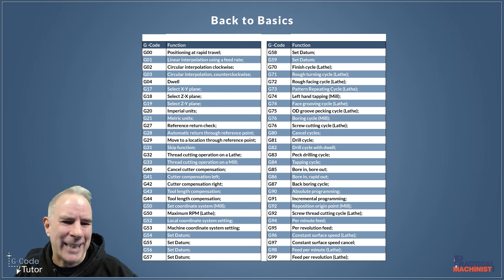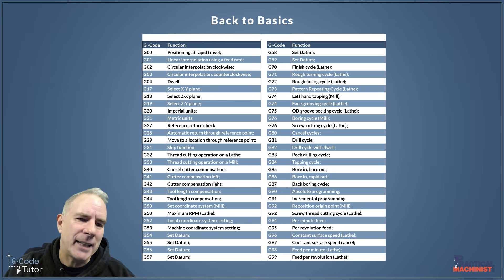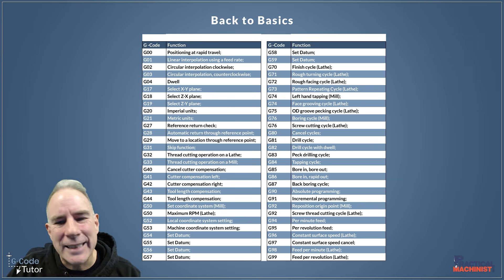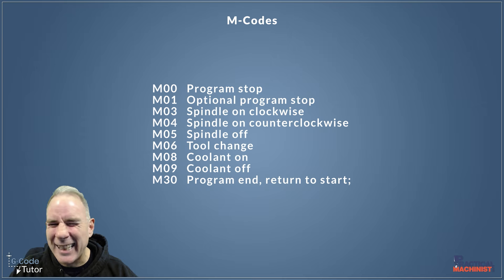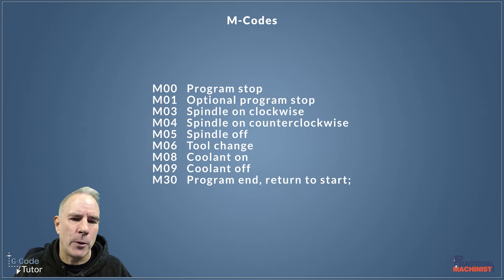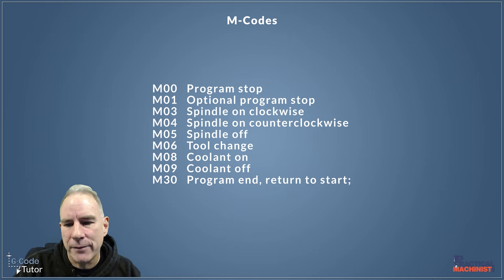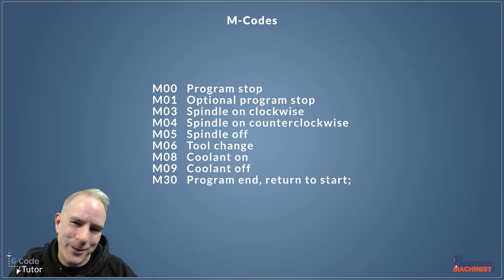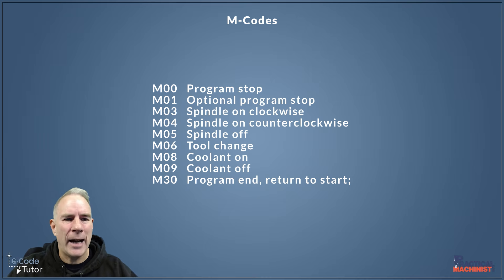This is a standard list of G-codes — the ones that tend to be shared across most machines. Many machine manufacturers use custom G-codes and custom M-codes to handle things their machine does differently from the standard. Here's also a standard list of M-codes. These generally don't change, but you might see something like M119 being a pallet change on one machine or a more complex flood coolant system on another. G-codes and M-codes can vary outside the standard depending on the manufacturer, which makes G-code teaching challenging. But if you learn standard G-code programming, when you switch to a machine with different M-codes or G-codes it's very easy to pick up on the differences.